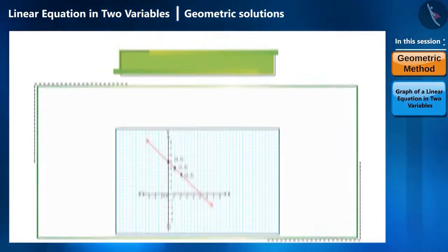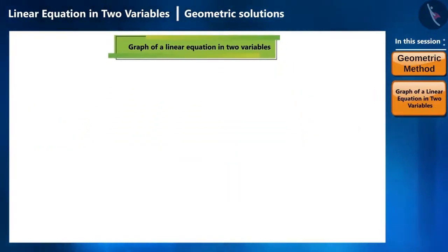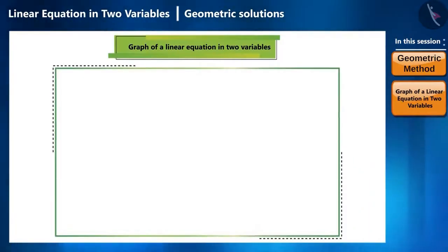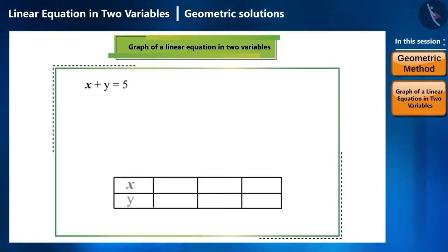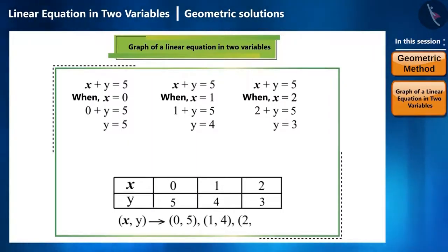So let us see how to construct the graph of a linear equation in two variables. First, let us take a linear equation with two variables such as x plus y is equal to 5. Now, we will create a table like this where we will take different values for x and y. By replacing x with 0, we will get y is equal to 5. By replacing x with 1, we will get y is equal to 4. By replacing x with 2, we will get y is equal to 3. And we will write them in brackets as coordinate points like this: 0,5, 1,4, 2,3.